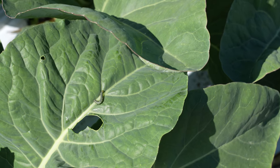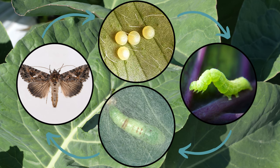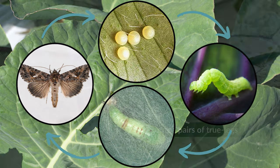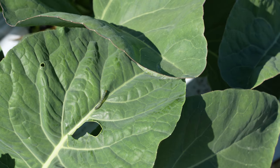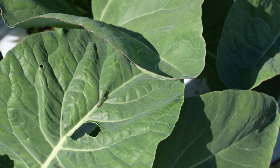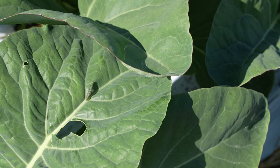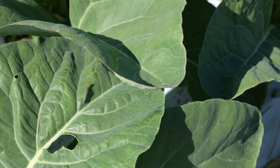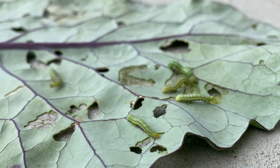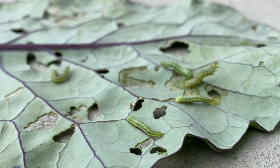The larval stage is a medium-sized caterpillar with a green or brownish-green body. It has three pairs of true legs at the front and several pairs of pro legs along the abdomen. The caterpillar moves by arching its body and extending forward, creating a looping movement which gives it the common name cabbage looper. The larvae feed on the foliage of plants, creating irregular holes and chewing damage on the leaves.